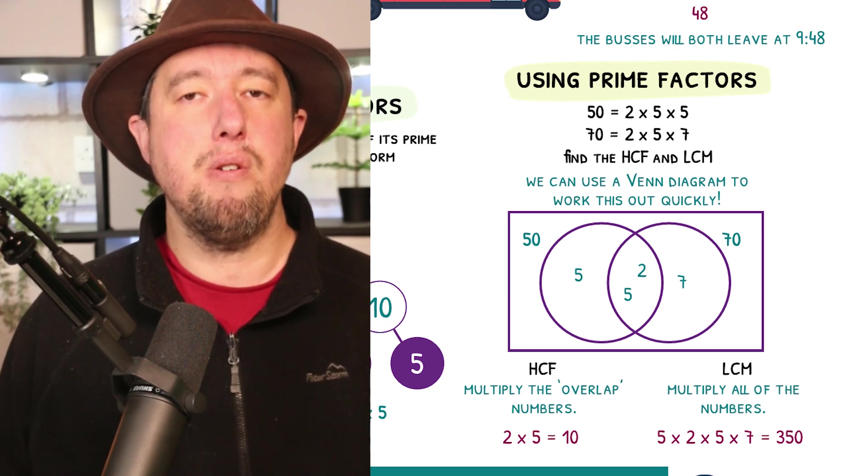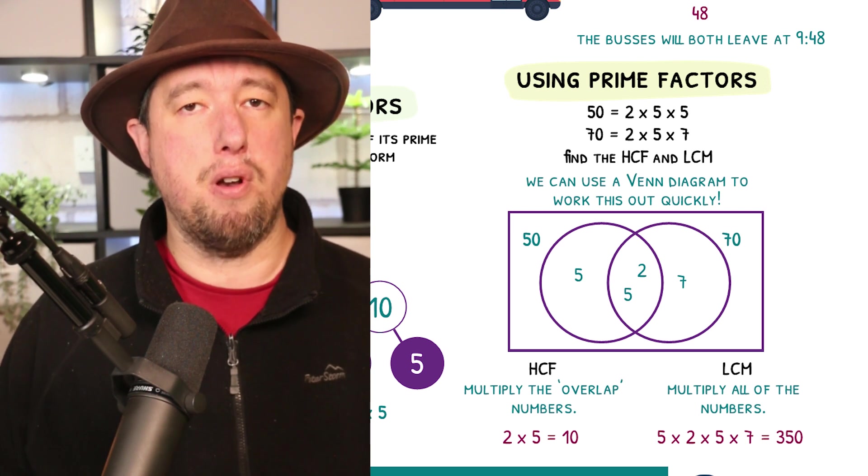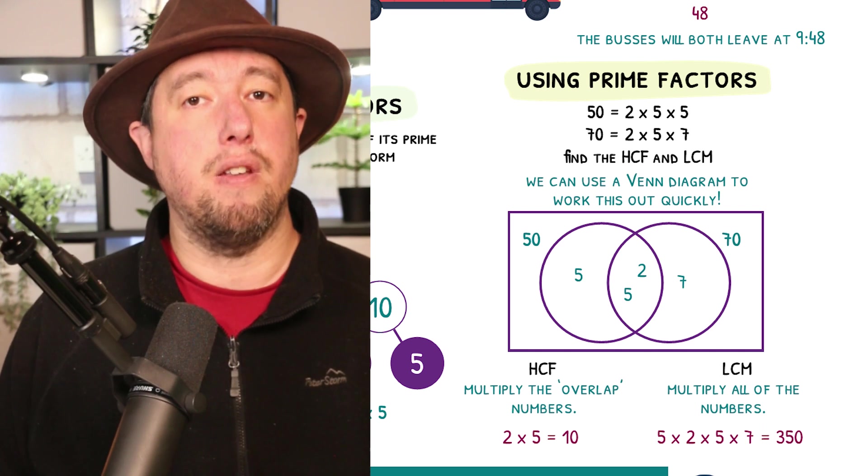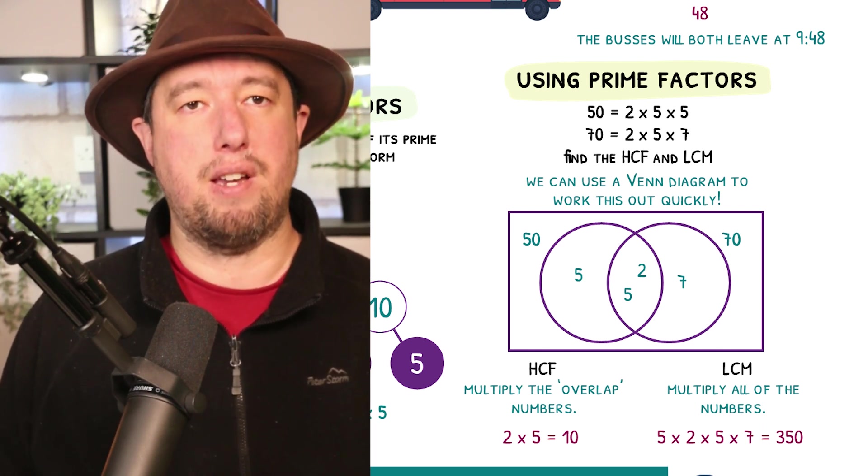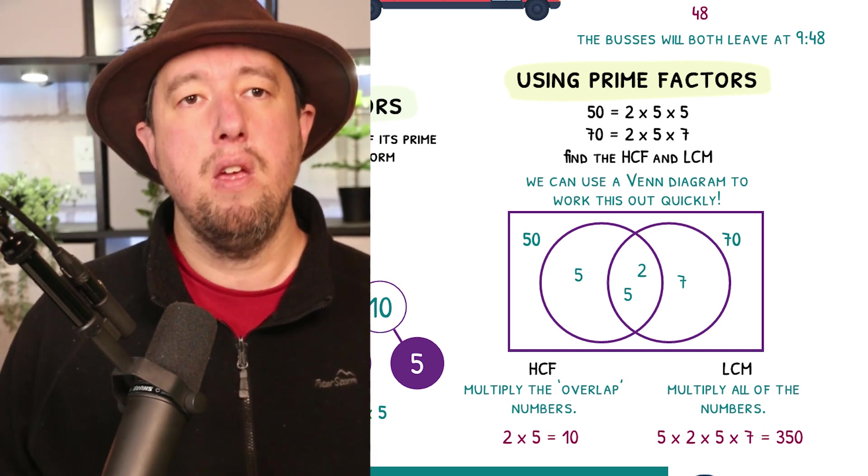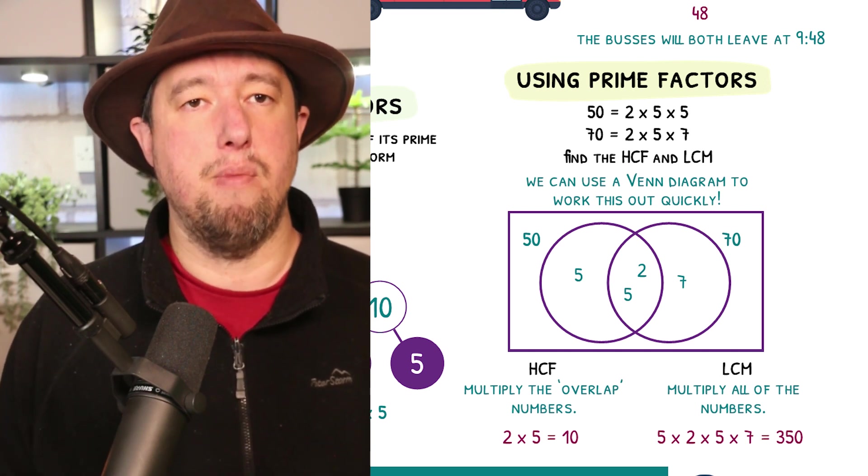Let's find the highest common factor and lowest common multiple of 50 and 70. First, we need to write both of these as product of prime factors, so 50 is 2 times 5 times 5, 70 is 2 times 5 times 7. Next, we need to draw a Venn diagram with these prime factors. We can see they both have a 2 and a 5, so these will go in the middle. 50 has a leftover 5 and 70 has a leftover 7, so we'll add these to the Venn diagram as well.